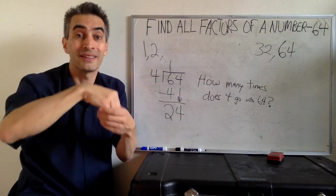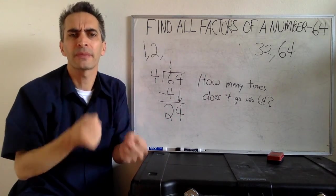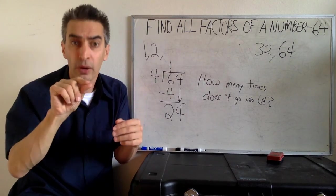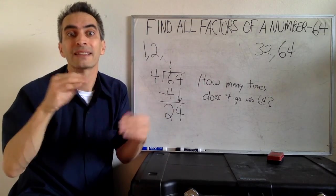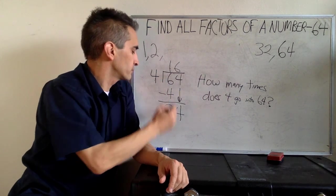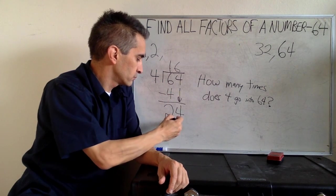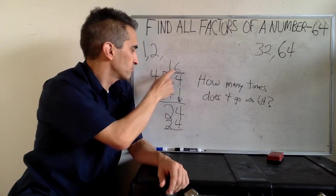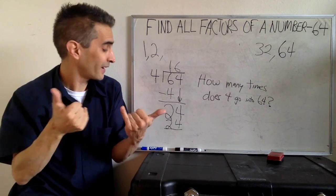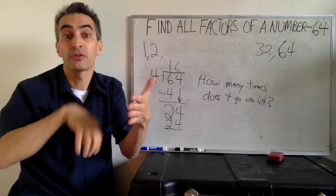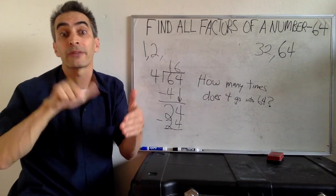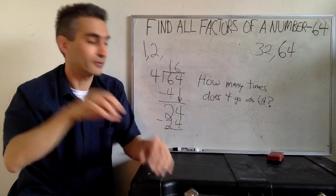Bring down the 4. 4 goes into 24. How many times? Let's see. 4 times 5 equals 20. 4 times 6 equals 24. 6 times 4 equals 24. 6 times 4 equals 24. Now what are we going to do? We're going to subtract. 24 minus 24. That's going to equal 0.